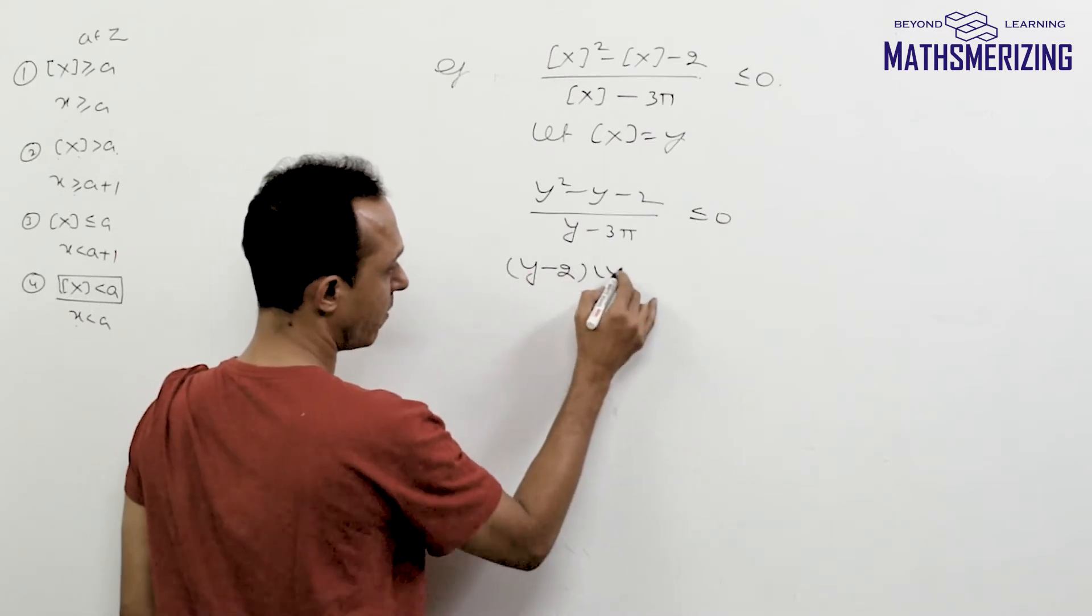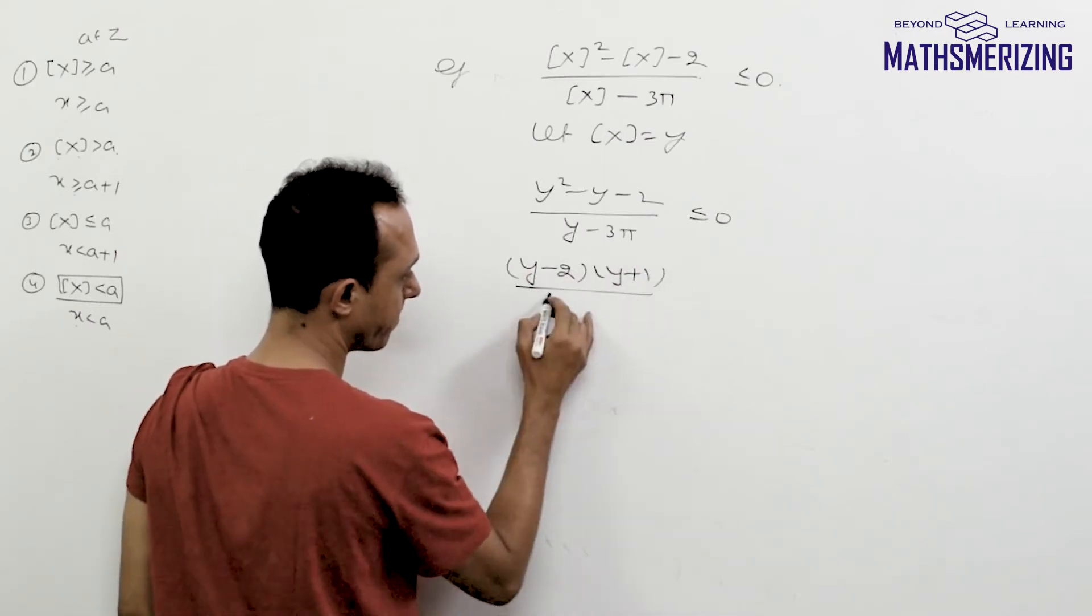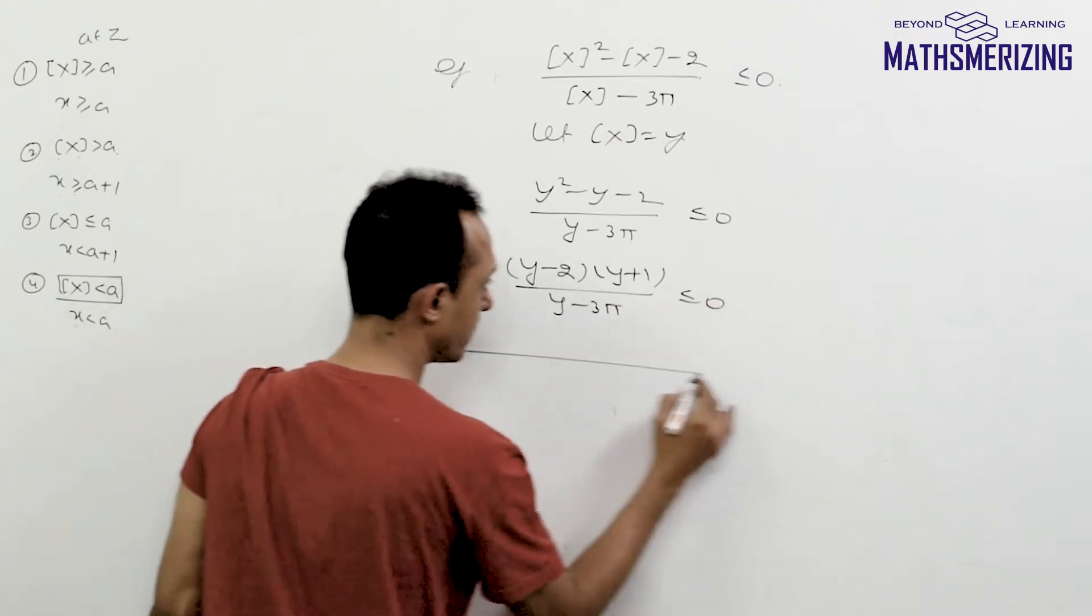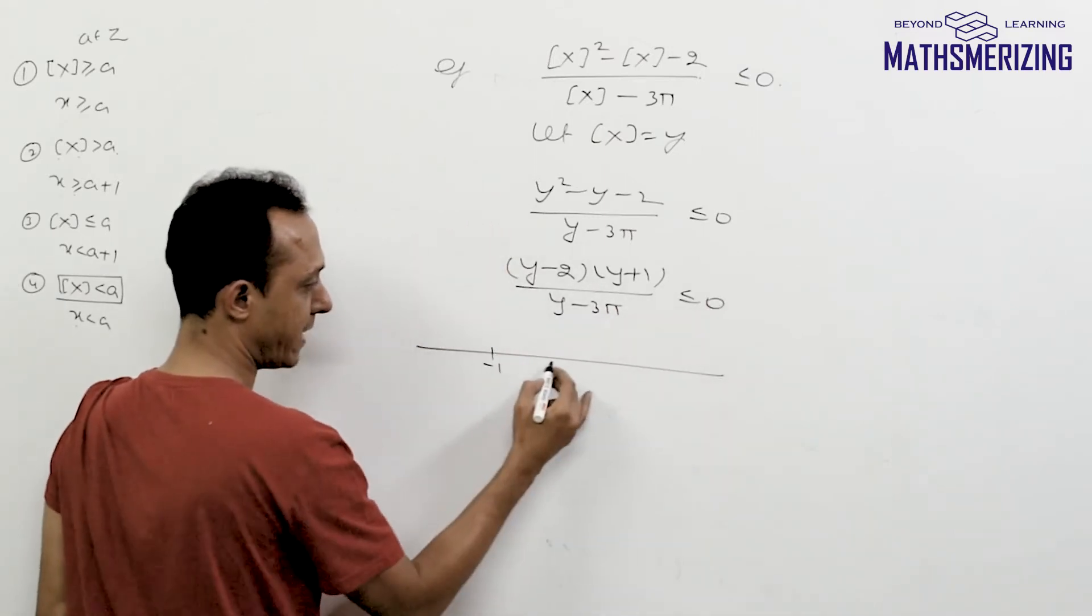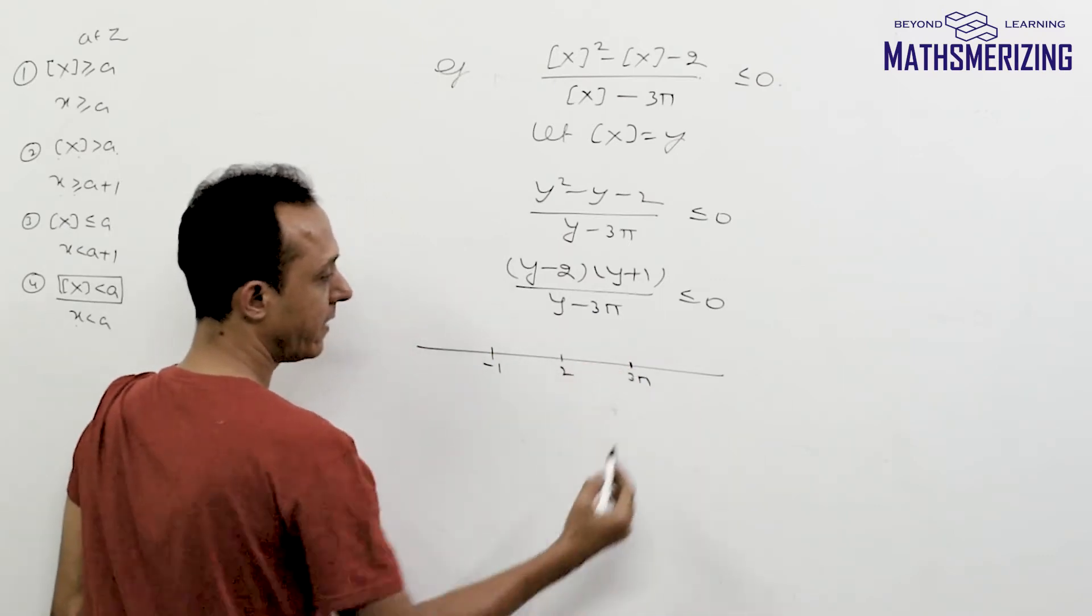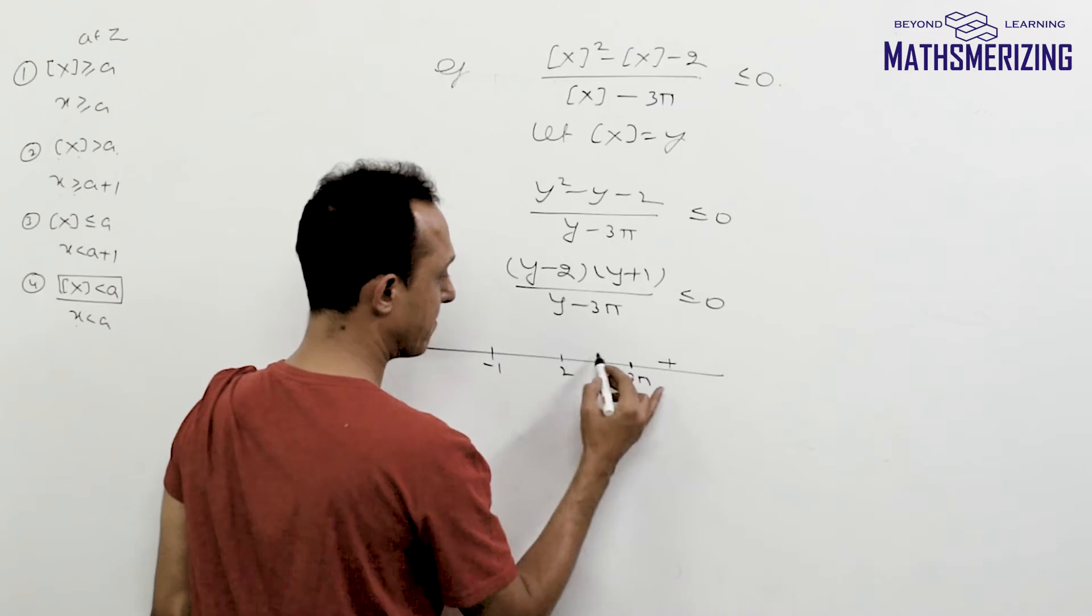So this is y minus 2, y plus 1, y minus 3π is less than or equal to 0. So this is minus 1 and then 2 and then 3π and this is right most is plus minus plus and minus.